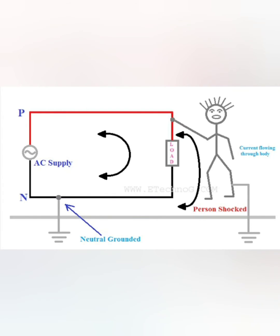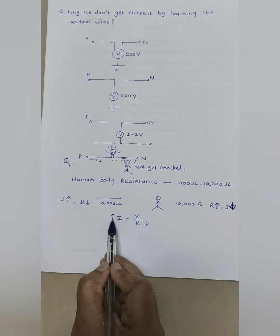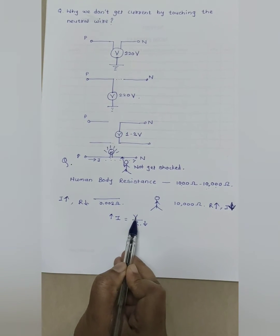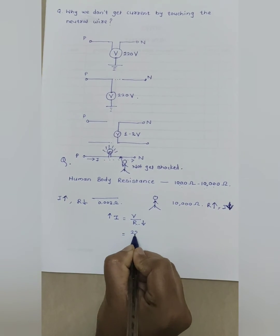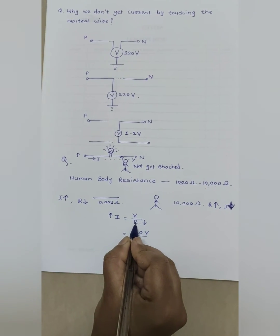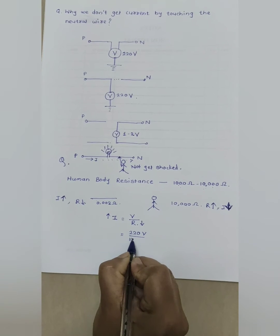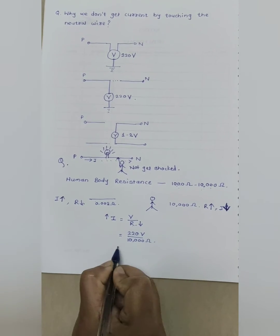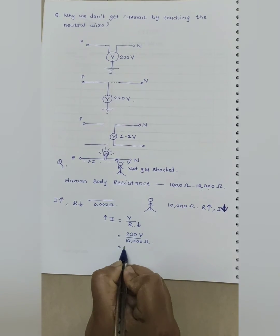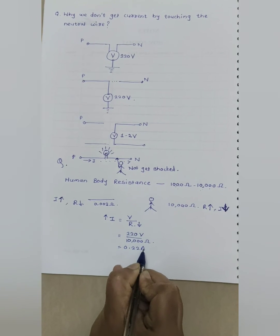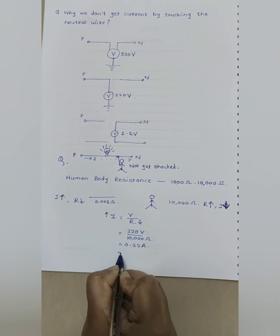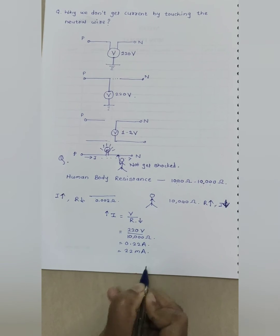In case any person touches the phase wire, then why he will get an electric shock? Let's see theoretically. I is equal to V upon R, where voltage is 220 volt and resistance of human body is 10,000 ohm. The answer is 0.22 ampere current. If I convert it into milliampere, then the answer is 22 milliampere.